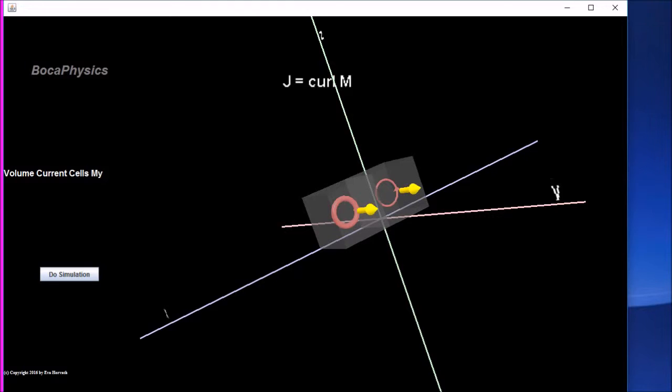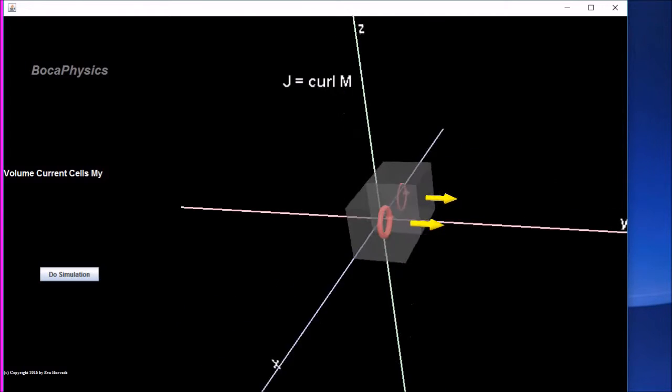Altogether, the net current upwards is the partial derivative of My with respect to x minus the partial derivative of Mx with respect to y all times del x del y. This difference of partial derivatives is just the z component of the curl operator. Therefore, the bound volume current density is just the curl of the magnetization.